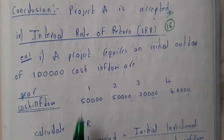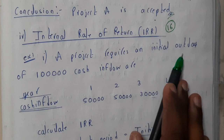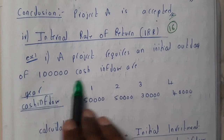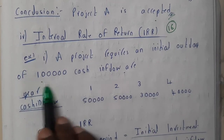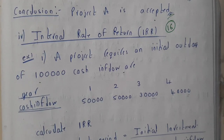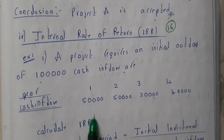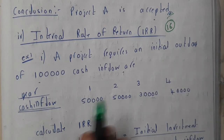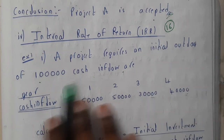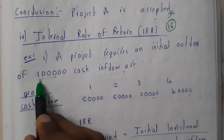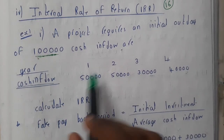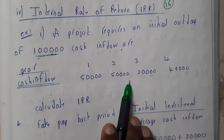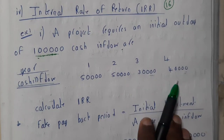A project requires an initial outlay of rupees 1 lakh. The cash inflow is given for four years: 50,000, 50,000, 30,000, and 40,000. We are asked to calculate the IRR.